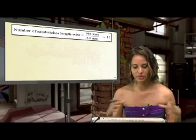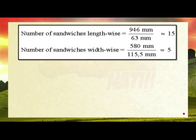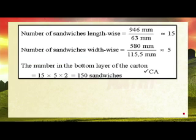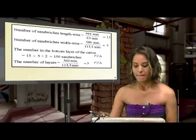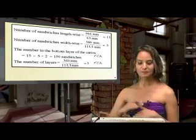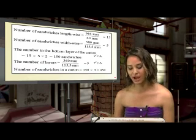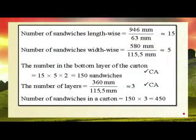So quite a bit. Now we're going to work with the breadth orientation. We're going to say 946 millimetres divided by 63 millimetres, and the number of sandwiches widthwise is 580 millimetres divided by 115.5. We're then going to multiply those by one another and multiply by 2 as well, because there are two triangular prisms in the square, and that gives us 150 sandwiches. But we're also still working with height — multiply 150 by 3 and that gives us 450.